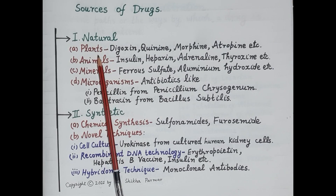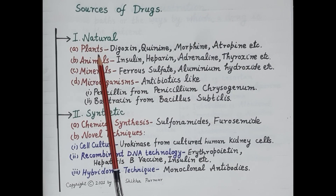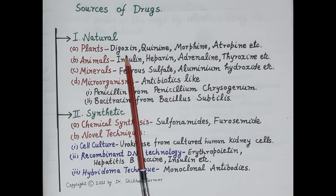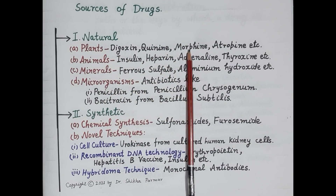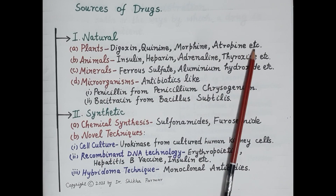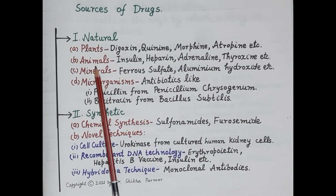Now let's first talk about the natural sources of drugs one by one. The first natural source of drugs is plants. Some plants possess medicinal properties. Some very well-known examples of drugs obtained from plants are digoxin, quinine, morphine, atropine, etc.